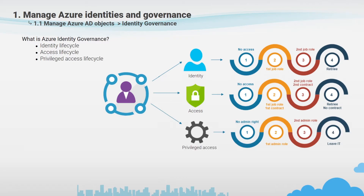Privileged access is a key part of identity governance, especially given the potential for misuse associated with those administrative rights that can cause harm to an organization. The employees, vendors, and contractors that take on administrative rights need to be governed.